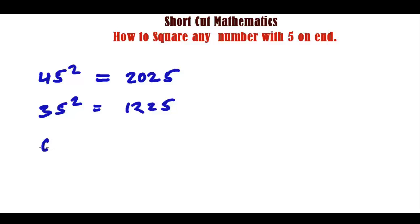Let's say 65. 6 plus 1, 7, 7 times 6, 42, and 25. How easy it is. So let me take you to the trick behind this.